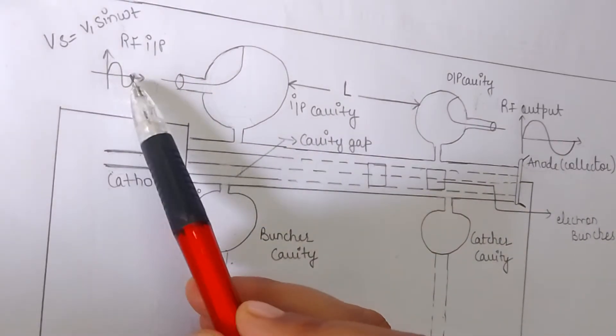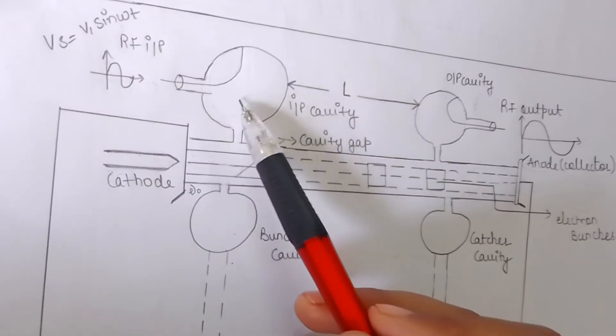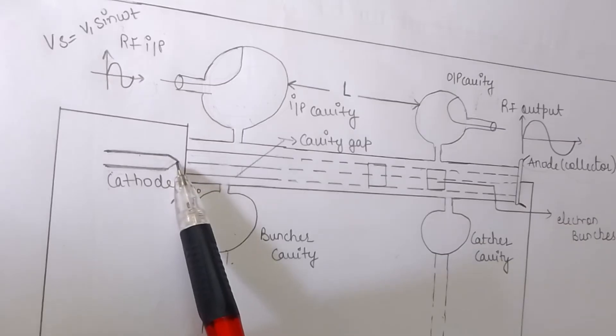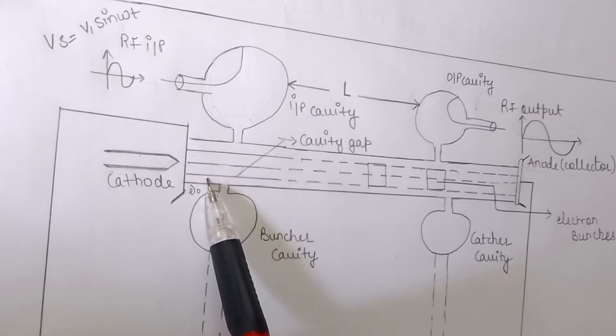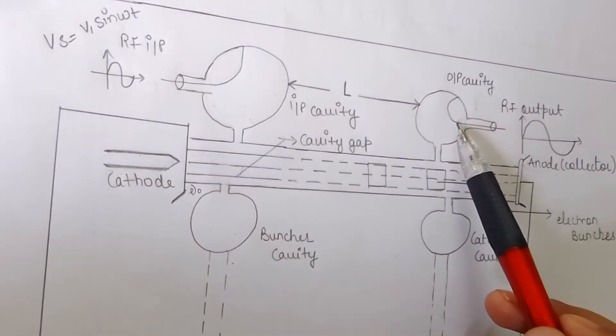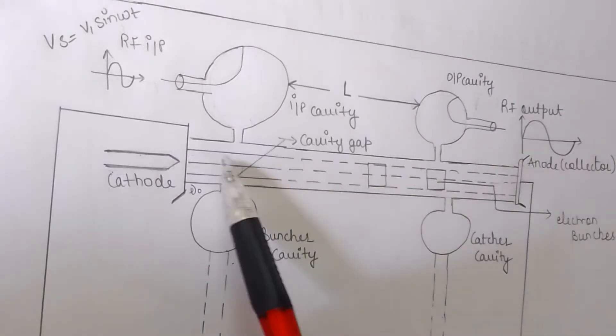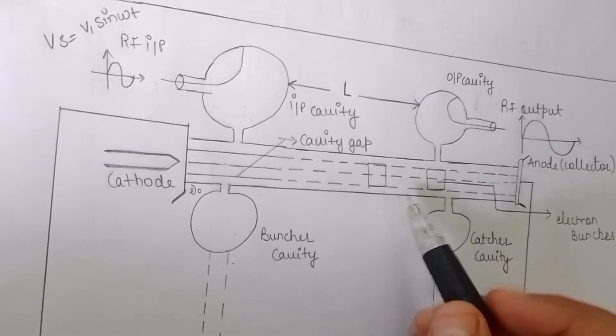This is the RF input, which is given as the input to the first cavity or the buncher cavity. This is the cathode which is used to emit the electrons uniformly. This is the second cavity or the output cavity and also known as the catcher cavity. These are the uniform electrons and after passing through the buncher cavity, these electrons are formed into the electron bunches.